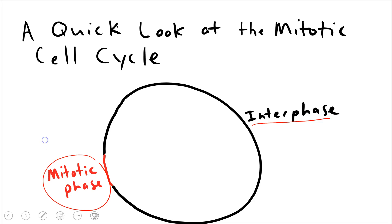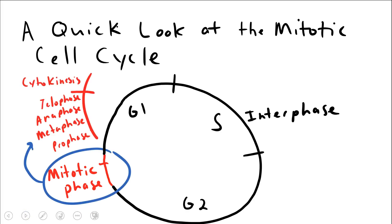Interphase is the majority of the life of the cell. Here gene expression is happening — the cell is doing its thing. If it's a neuron, it's a brain cell doing brain cell stuff. Interphase can be broken up into three parts: G1 (Gap 1 or Growth 1), and G2, where cells are growing, expressing proteins, making more organelles, and G2 is preparing to divide.